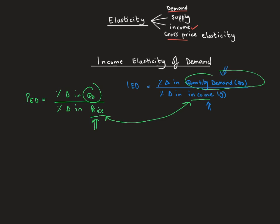We're just trying to find out what happens to quantity demanded if there's a change in price, and now in this case, what happens when there's a change in income. If our income increases, we should expect that our quantity demanded or consumption levels would increase. But if we lose our jobs or our income decreases, then quantity demanded or consumption also decreases.